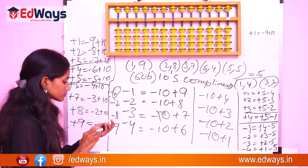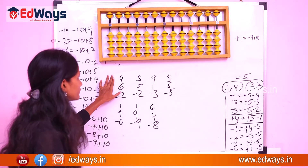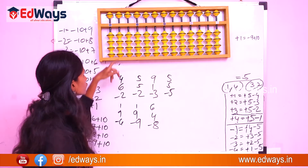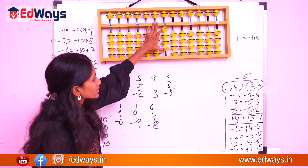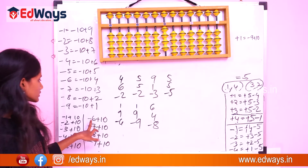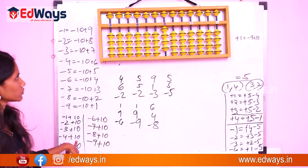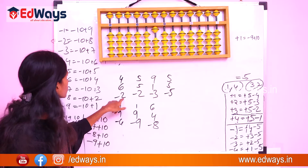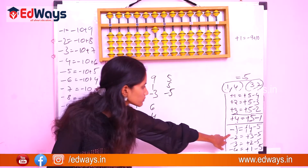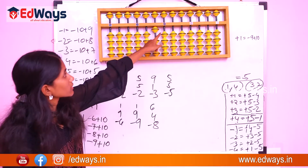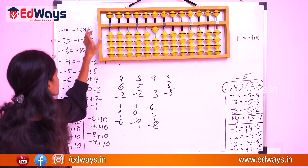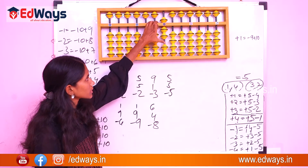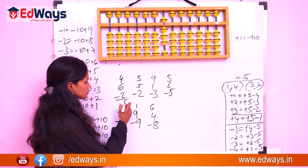Let's go ahead with a few examples for learning tens complements. For example, 4 plus 6 — what is plus 6? 6's complement is 4, so that becomes minus 4 plus 10. Now 10 minus 2 — what is minus 2? We check: minus 2 as plus 3 minus 2, but that is not available. So minus 2 equals minus 10 plus 8. The answer would be 8.